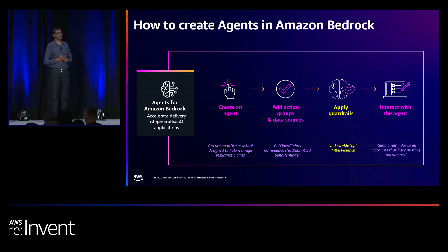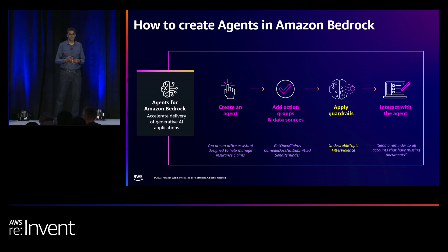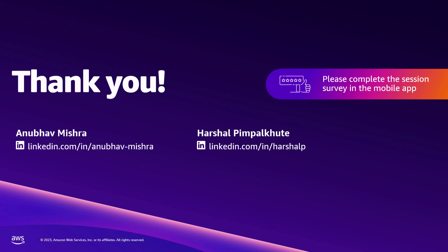In closing, the agent workflow now changes with guardrails in the picture. You create an agent, add action groups and knowledge bases, interact with the agent, and the new step is applying guardrails — which holds true for both creation and interaction of the agent. With that, we are at the end of our session. Thank you very much for your time. We'll be around here for Q&A.